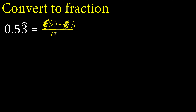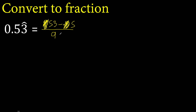One number, one time. After the point, there is one number outside the symbol, therefore 0 — always 0. One number, one time.